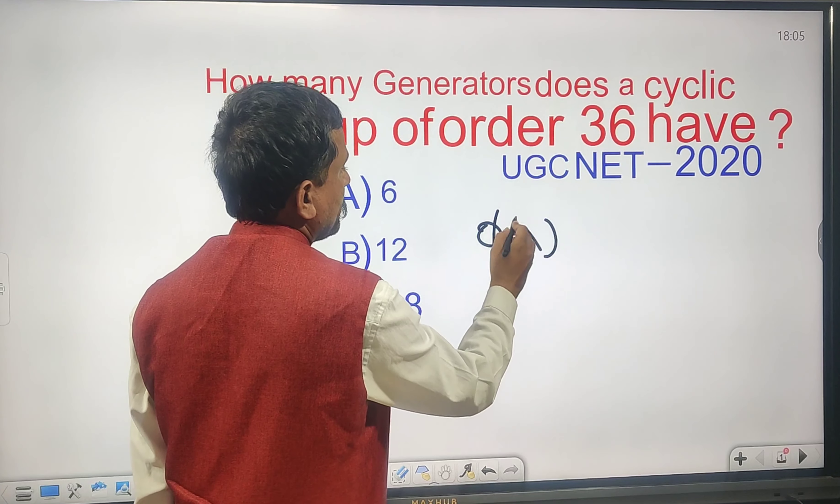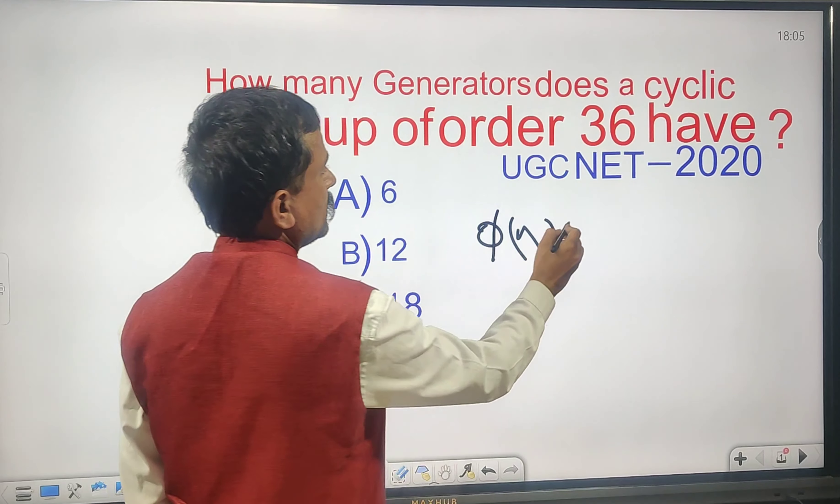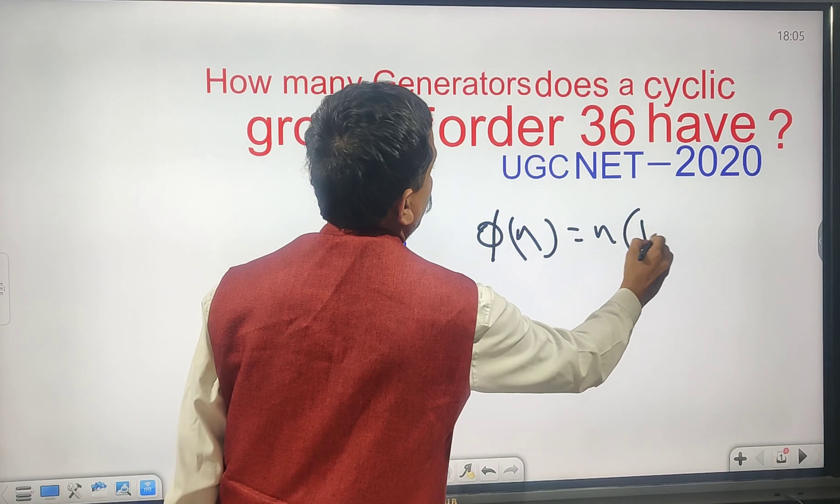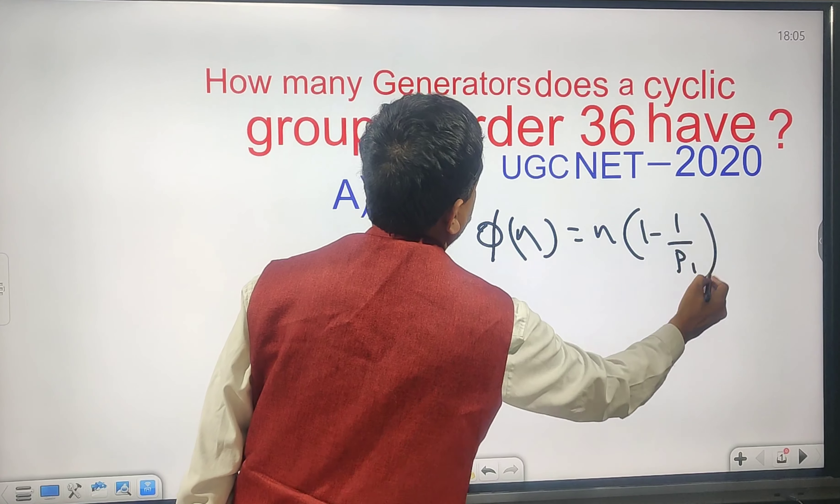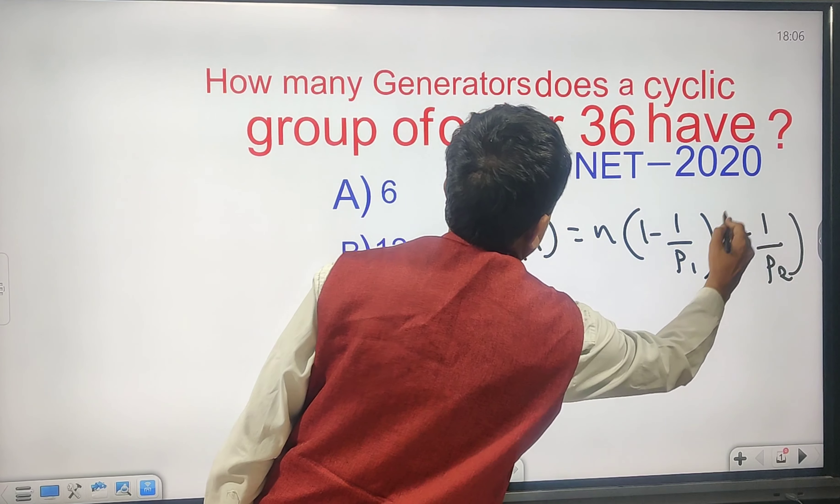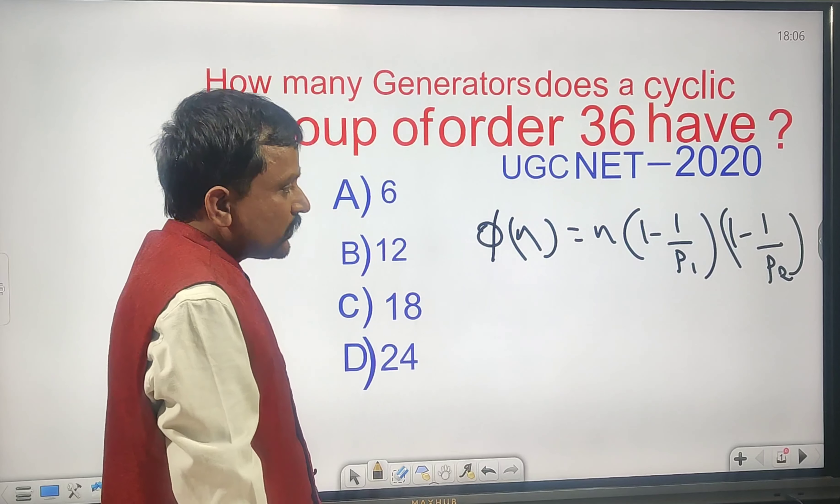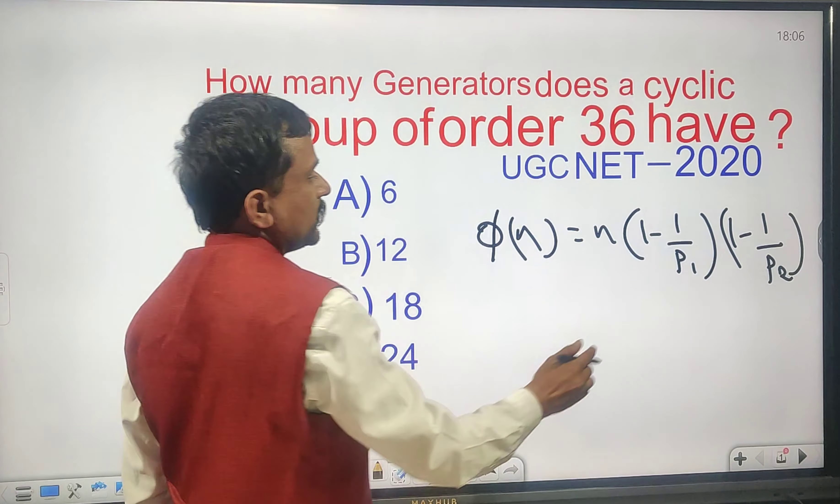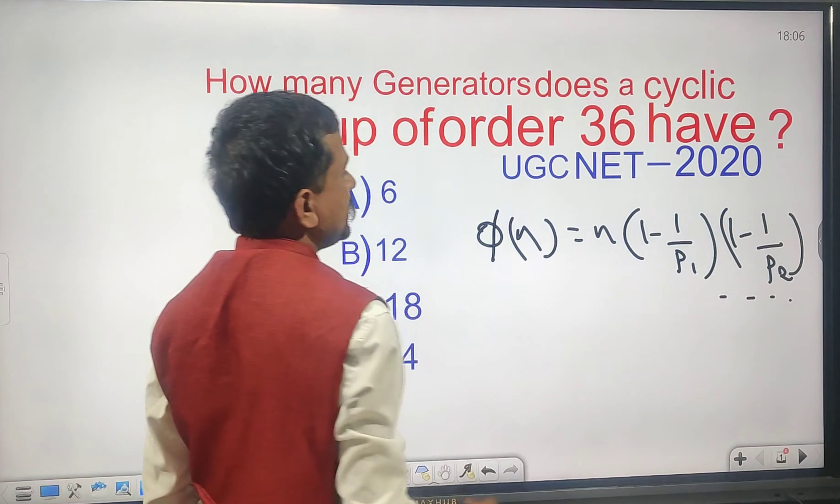φ(n) equals n times (1 minus 1/p₁) times (1 minus 1/p₂), and so on. This is the formula.